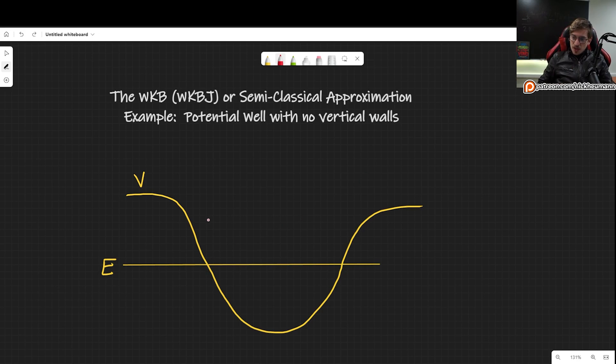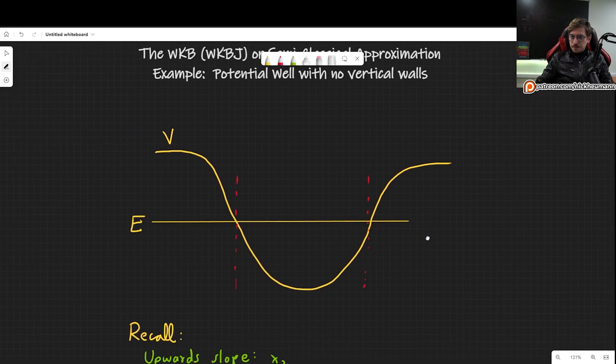We have these two points when the energy meets the potential. The first one let's call it x1 and the second one x2. Those are our turning points. One of them happens on a downward slope, the other one happens in an upwards slope.